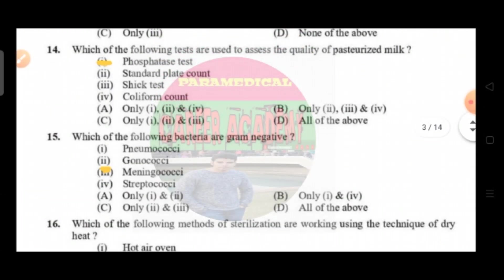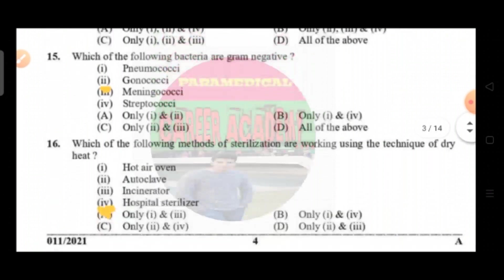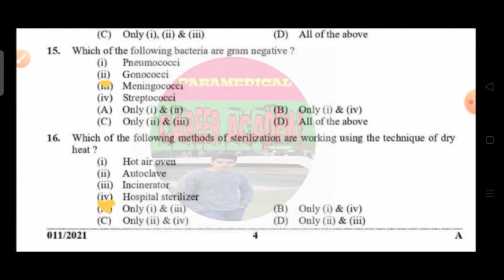Question number fourteen: which of the following tests are used to assess the quality of pasteurized milk. Option A is phosphatase test, option B standard plate count, option C stick test, option D coliform test. The correct answer is option A, that is only one, two, and four.